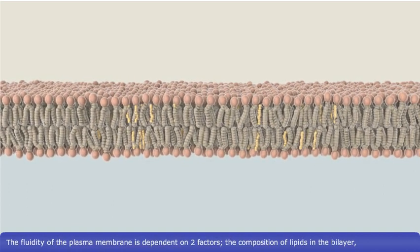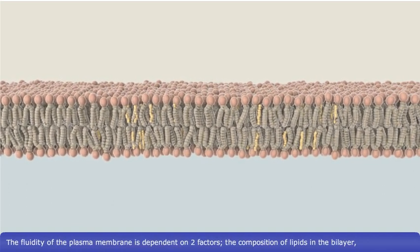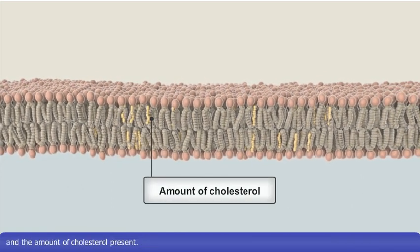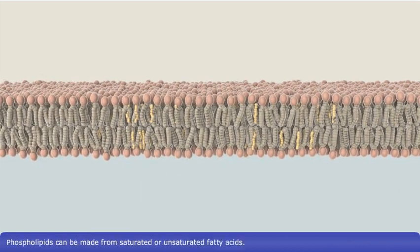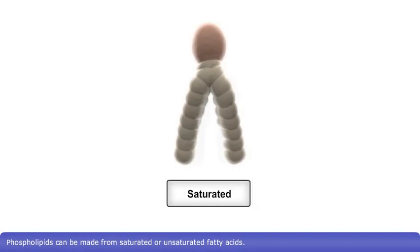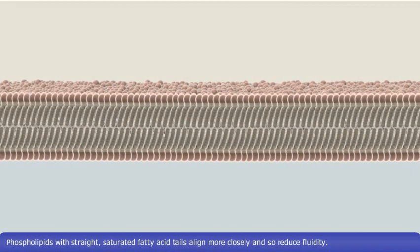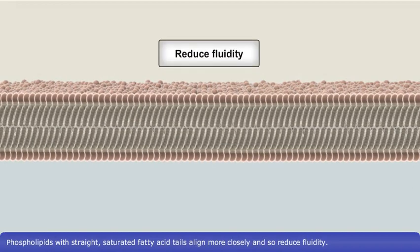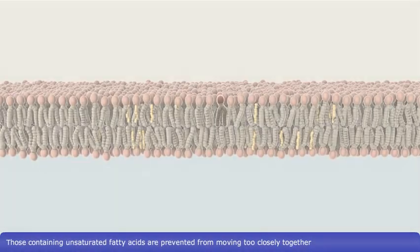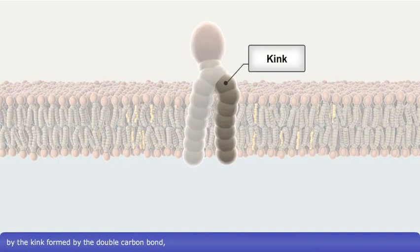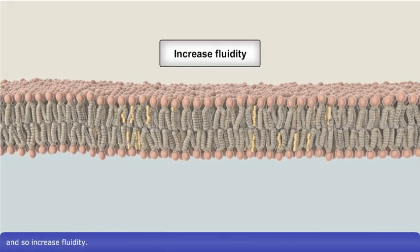The fluidity of the plasma membrane is dependent on two factors: the composition of lipids in the bilayer and the amount of cholesterol present. Phospholipids can be made from saturated or unsaturated fatty acids. Phospholipids with straight, saturated fatty acid tails align more closely and so reduce fluidity. Those containing unsaturated fatty acids are prevented from moving too closely together by the kink formed by the double carbon bond, and so increase fluidity.